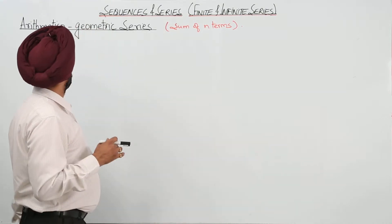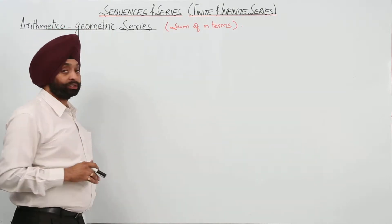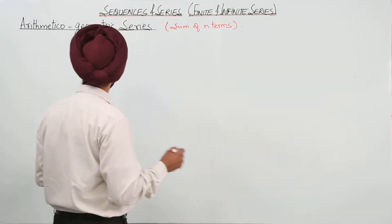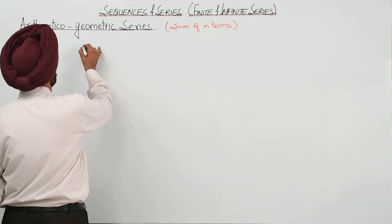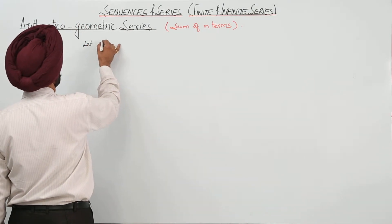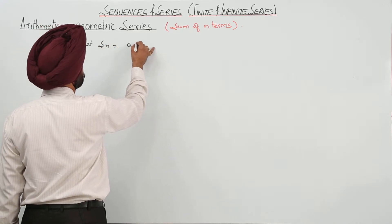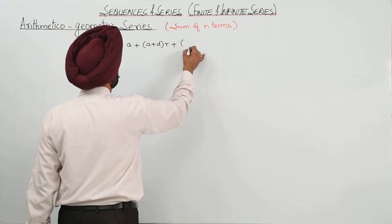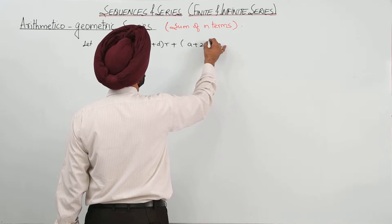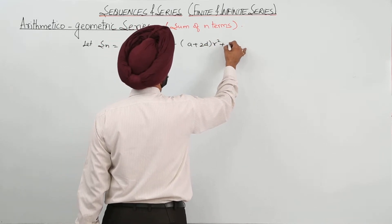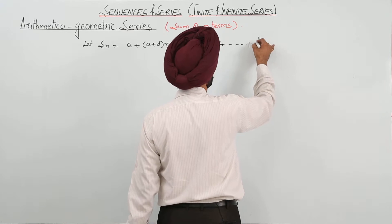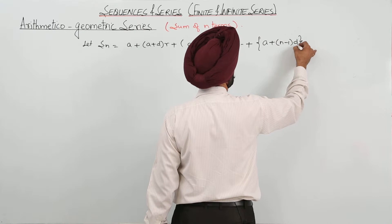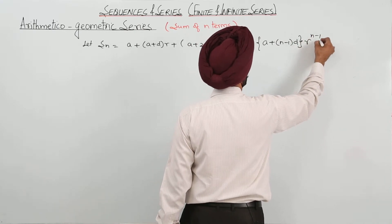Now let's derive the relation for the arithmetico-geometric series sum of n terms. Let S_n equal a plus (a plus d)r plus (a plus 2d)r squared, going up to (a plus (n minus 1)d) r raised to power n minus 1.